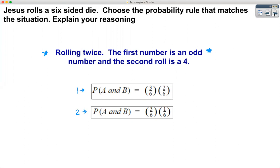Pause the video and take as long as you need to see if you can answer the question on your own. Once you think you have it, unpause and we'll continue. The first number is an odd number and the second roll is a four. Now why do I keep stressing this word 'and'? Every time I see this word 'and', I immediately think multiplication. I know I have two events being joined together, and we're looking for the probability of both of those events happening.